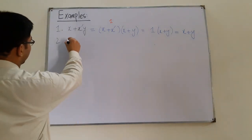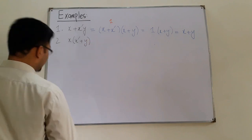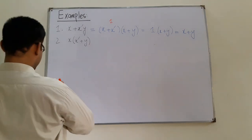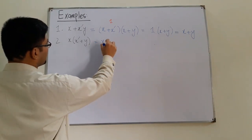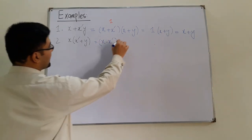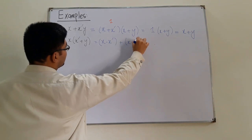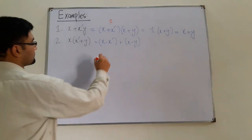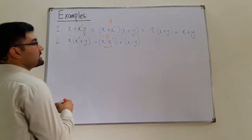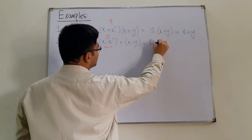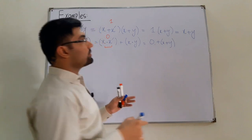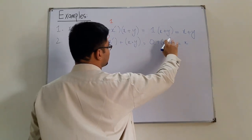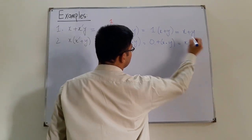Second example: x into (x complement plus 1). Now this is the distributive law of the OR operation over the AND operation, so this would be equal to (x into x complement) OR with (x into y). We've seen that 0 ORed with anything is the same thing, and x into x complement is 0, so x into y OR with 0 would be x into y. So x into y is the answer.